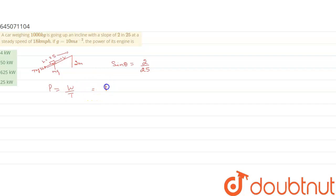And work done can be written as force into displacement upon time. So displacement upon time will become force into velocity. So we have P that is equal to mg sin θ times v.